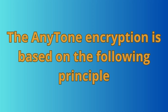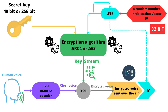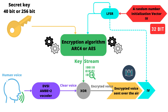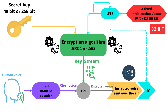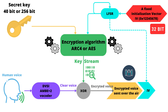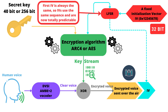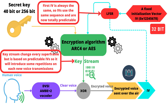Now, the Anytone encryption is based on the following principle: replace the random 32-bit number IVs by a fixed number. The fixed number always has the same value — this is 0x12345678. By inserting this fixed number into the LFSR, you will always obtain the same first IVs, so the IVs use the same sequence and are now totally predictable. The keystream changes every superframe, but is based on a predictable IV, so it will introduce repetition on each new voice transmission.